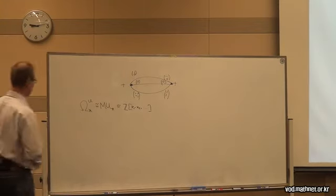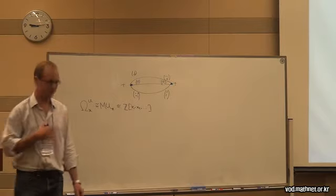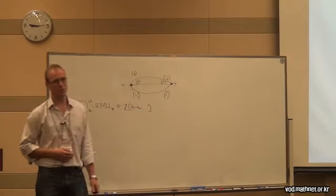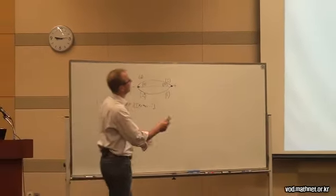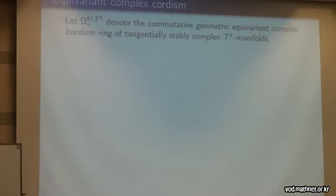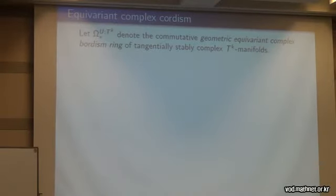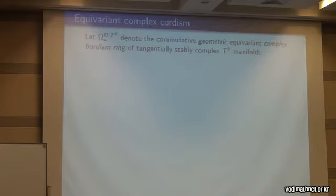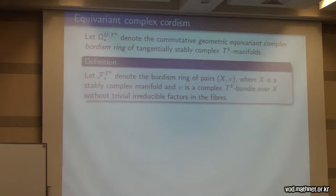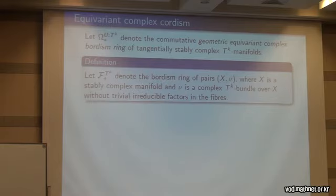People have tried to do this equivariantly, and Connor and Floyd in the 1960s initially came up with the definition for a geometric form of equivariant bordism. Using the same definition, we use equivariant manifolds: Ω*^{U,TK} denotes the commutative geometric equivariant complex bordism ring of tangentially stably complex TK manifolds. Of course you can do this for any compact Lie group; we're only interested in the torus today. Not very much is known about these groups — it's a very hard subject to describe this ring.